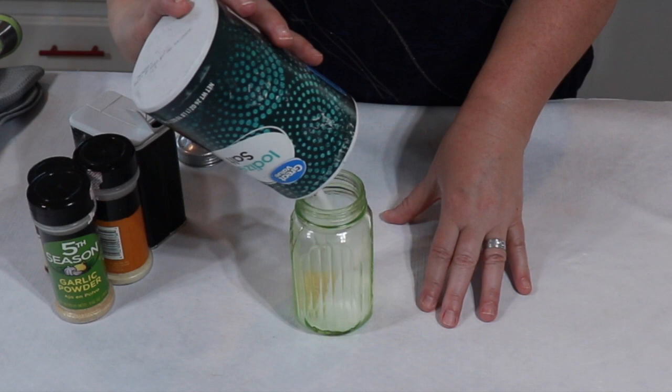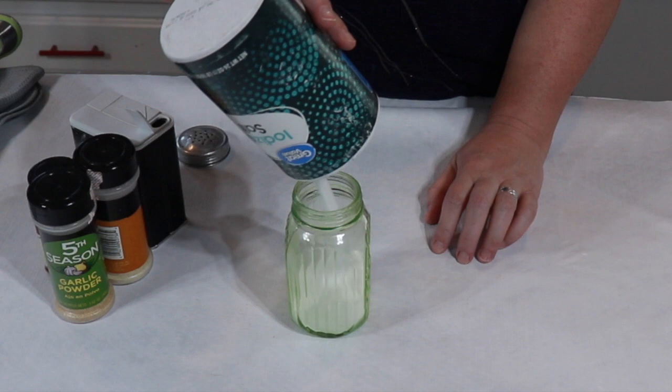This is super easy. All you do is take salt. Now you can measure this out and then use a funnel and pour this into your salt shaker if you want after it's mixed.